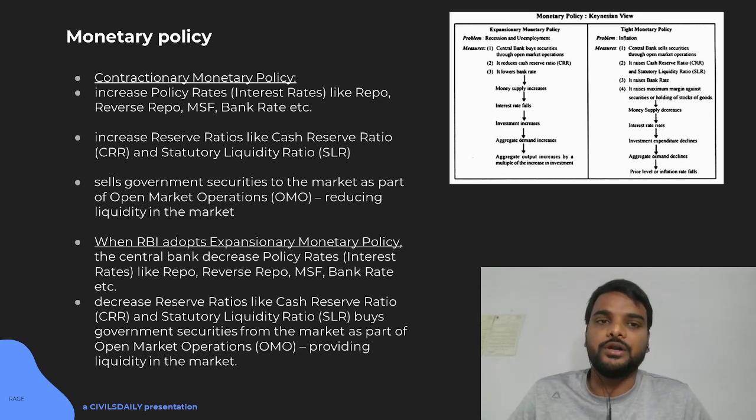You can see in the screen that there can be two types of monetary policy in Keynesian model. When you have problem of recession and unemployment, you need more money to be invested, that will raise the aggregate demand and that will raise the output. So, the recession problem will solve. When you are having recession, that is GDP is becoming less, you will focus on the expansionary monetary policy.